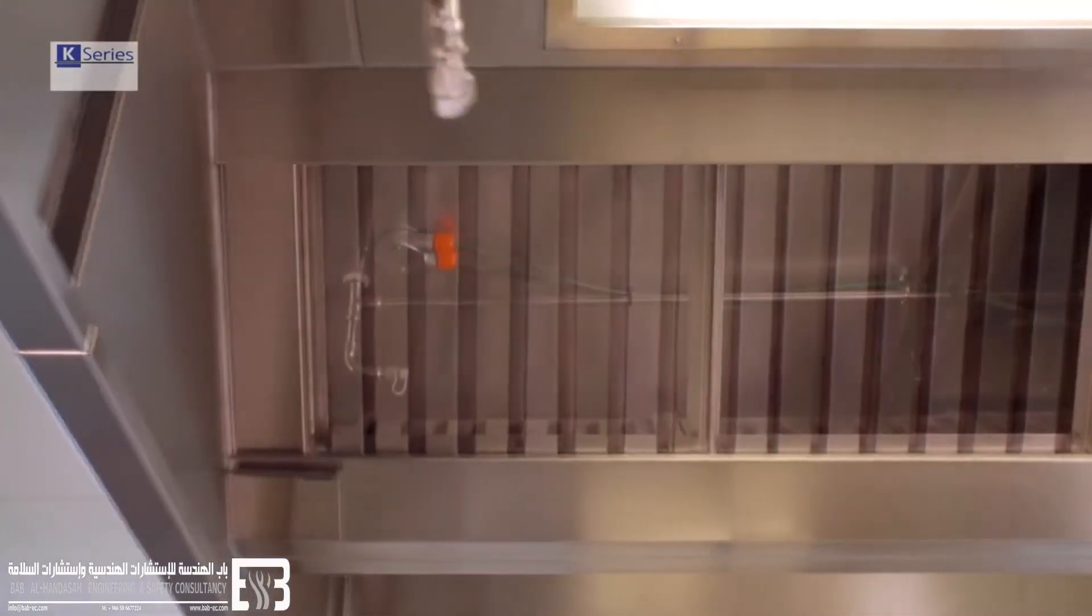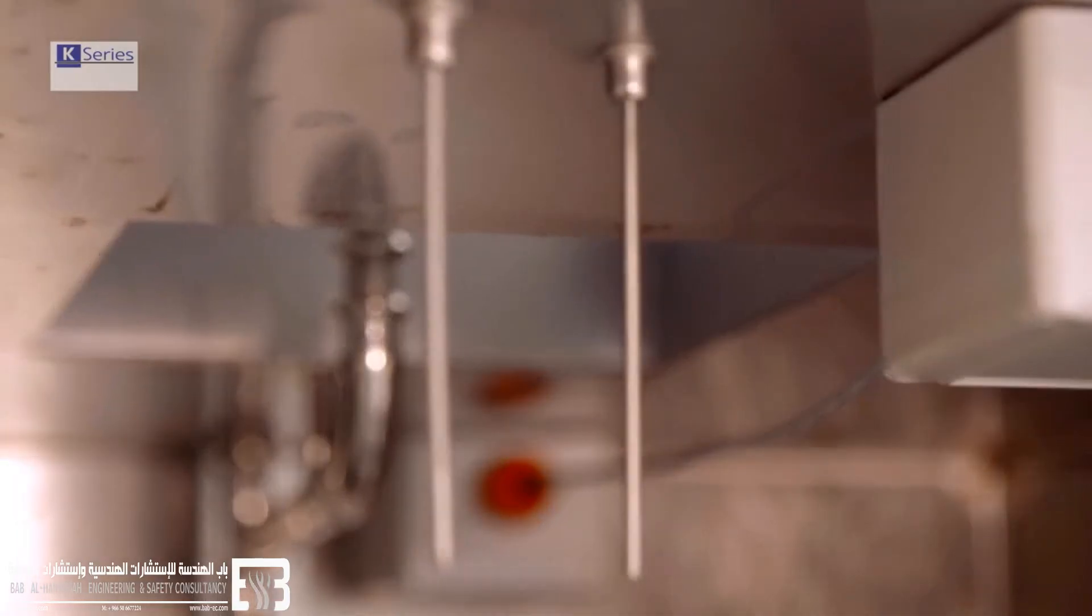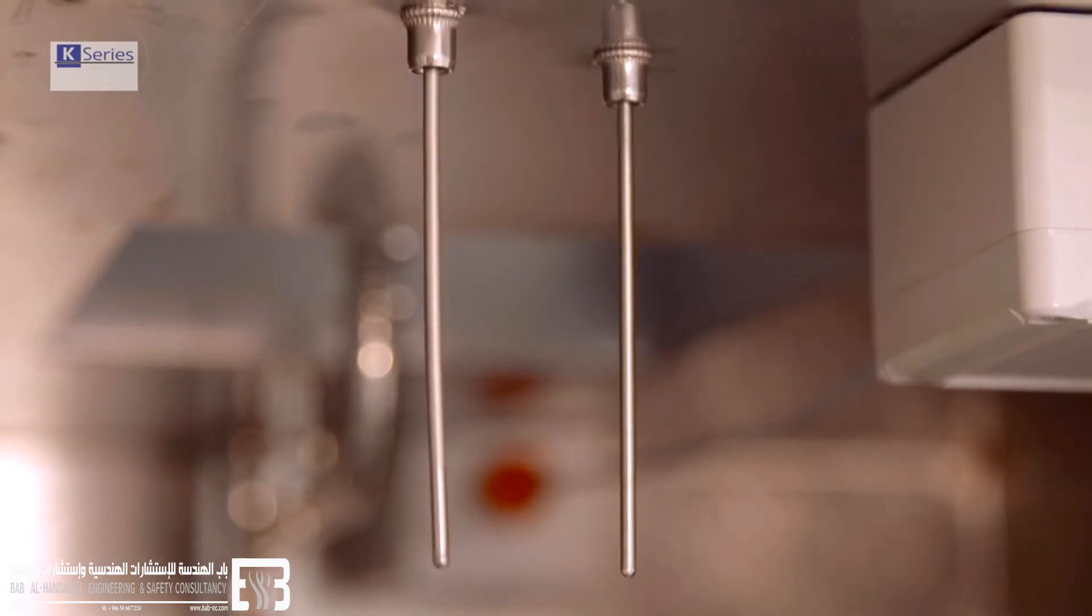Fire detection is achieved by using linear heat-sensing cable or probes that run along the length of the canopy back to the control panel.